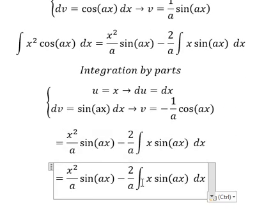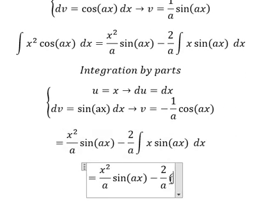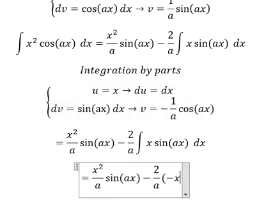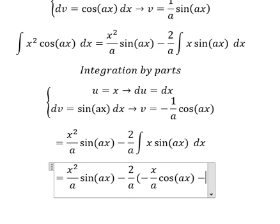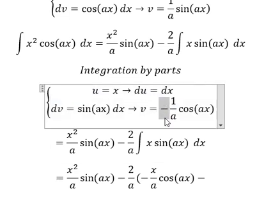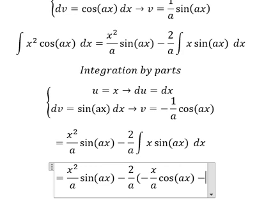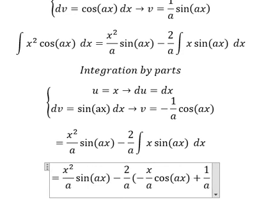So we have u multiplied by v minus the integral of v du. Since we have a negative v, the minus times negative gives us positive. And we have the integration of cosine ax dx.